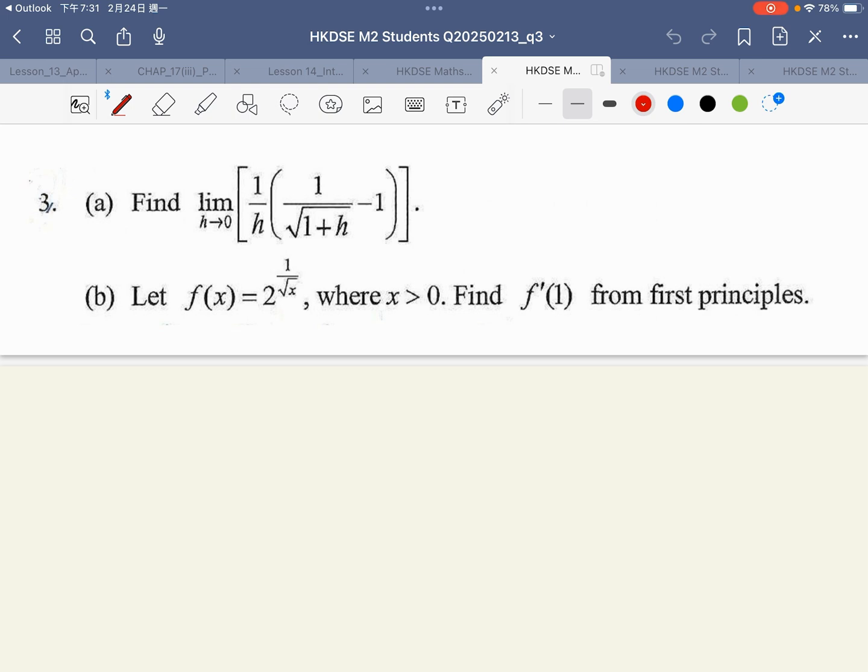This DSC M2 question involves first principles. For part (a), you need to simplify this limit. First, I'll make a common denominator: square root of 1 plus h times 1 minus square root of 1 plus h. Then multiply both numerator and denominator by 1 plus square root of 1 plus h.